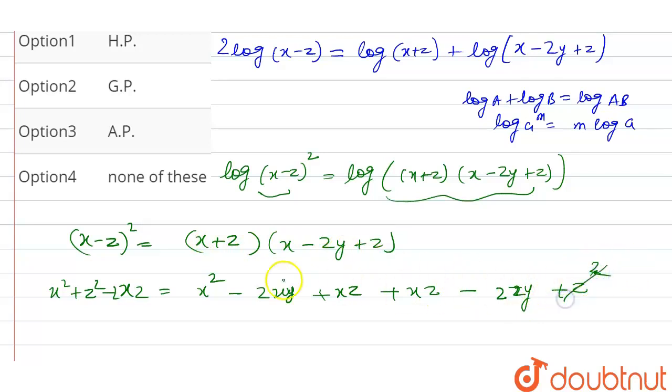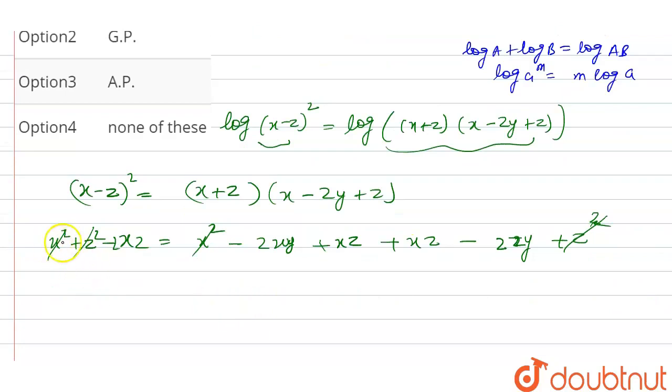Now z square and x square will cancel out, so we will get minus 2xz. So we can write this as minus 2xz is equal to minus 2xy plus 2xz minus 2zy.